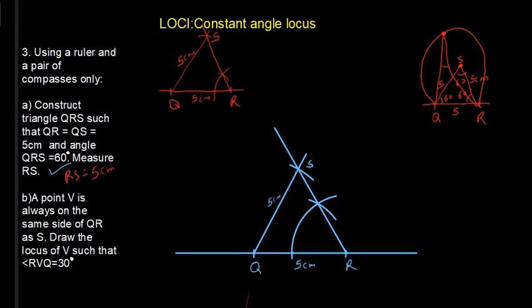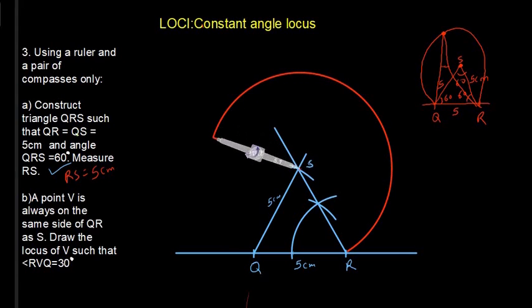So for us to do that here, we will have to delete these other parts. So we are going to get a pair of compasses. And then with a pair of compasses, we are going to have point S as the center of the circle. And then the radius will be either SR or SQ because they are equal in size, both are 5 cm. So we'll have to bring this down here and ensure that the radius is exactly SR. So once that has been achieved, we can now draw the locus of V.